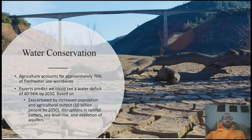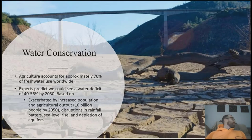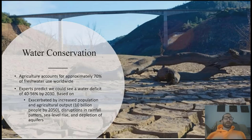Now I want to talk about water conservation. Agriculture accounts for approximately 70% of freshwater use worldwide — the majority of our freshwater is being used for agriculture. This is an issue as our population increases and we need to increase agricultural output to keep pace. With disruptions in rainfall patterns and sea level rise, experts predict we could see a water deficit of about 40 to 56% by 2030.